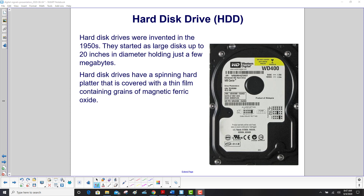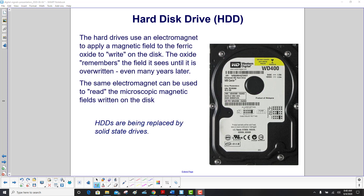Hard disk drives were invented in the 1950s. They started as large disks, up to 20 inches in diameter, holding just a few megabytes. Hard disk drives have a spinning hard platter covered with a thin film containing grains of magnetic ferric oxide — very similar in concept to CDs and vinyl disks, just different technology. Instead of a phonograph needle or a laser, the hard drive uses an electromagnet to apply a magnetic field to the ferric oxide to write on the disk. The oxide remembers the field it sees until it is overwritten, even many years later, and the same electromagnet is used to read the microscopic magnetic fields written on the disk.